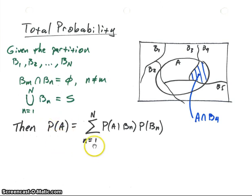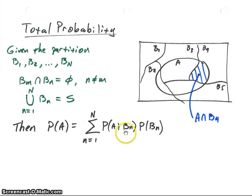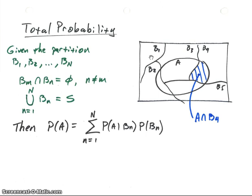Total probability says that suppose we have another set A — we can find the probability of A by looking at each of the individual sections that overlap with the sets in the partition. It's equal to the sum of conditional probabilities times their individual probability of occurring: probability of A given B1 times probability of B1, plus probability of A given B2 times probability of B2, and so on. Some intersections will be zero, but the sum of all those intersections times their individual probabilities gives us the probability of A occurring.